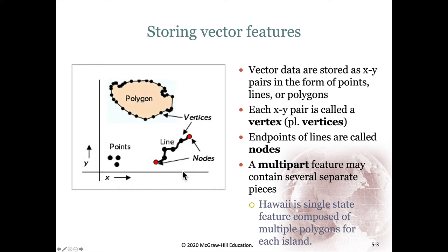These are all single part features, but we could have a multi-part feature where, for example, Hawaii, which is made up of several different polygons, is represented as a multi-part feature so that if we select Hawaii, all of those polygons are selected.